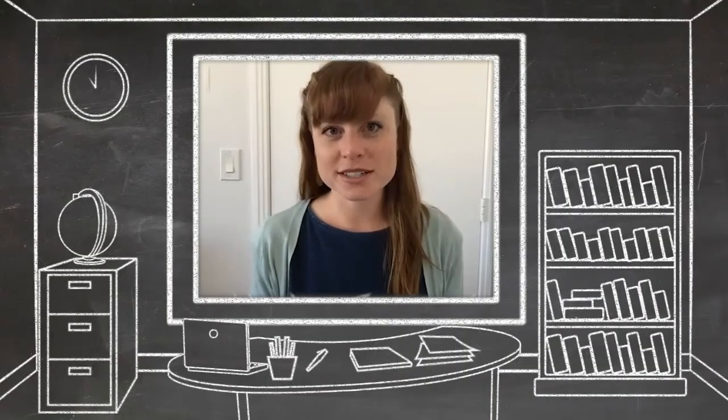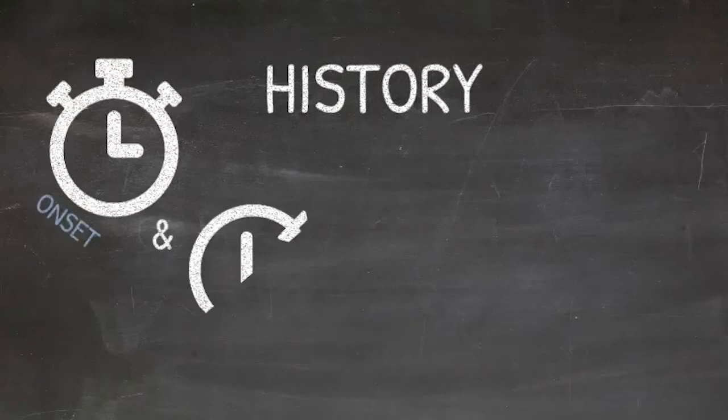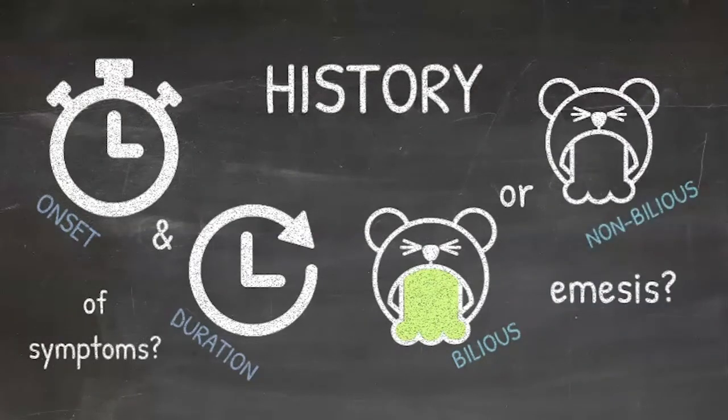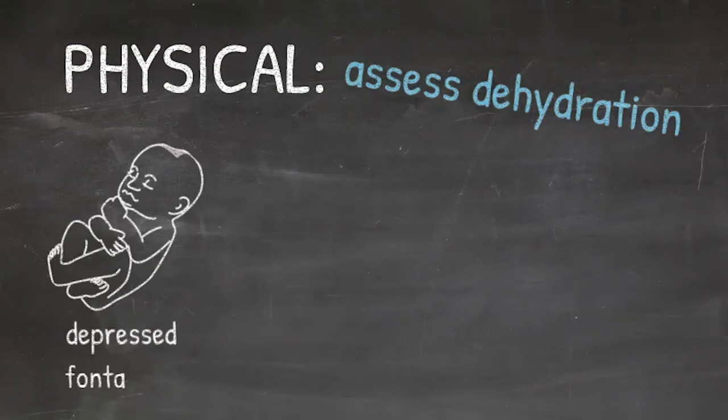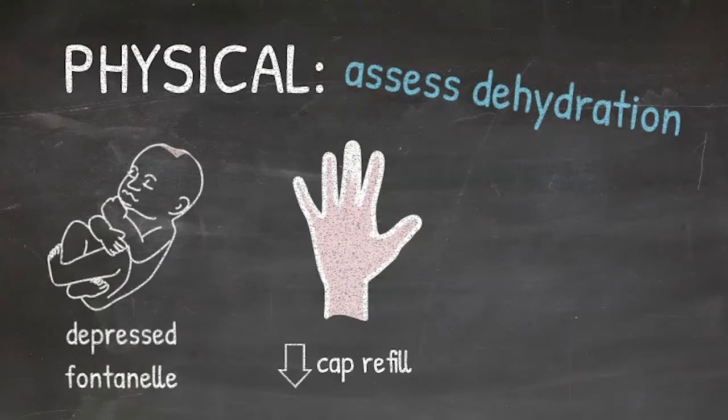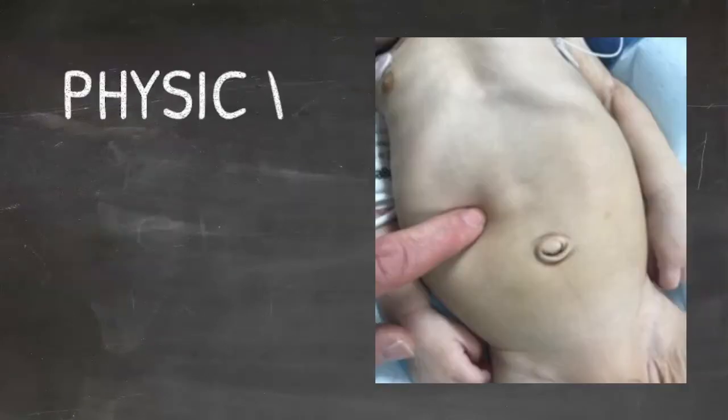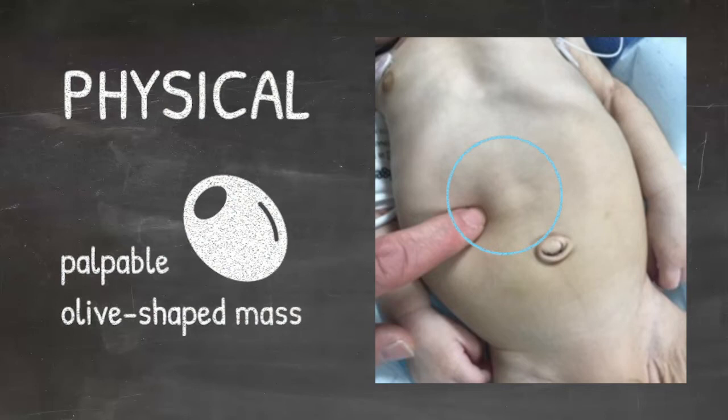How do you diagnose pyloric stenosis? The workup should start with a good history. Onset and duration of symptoms, character and nature of emesis are important. The most important part during a physical exam is to look for signs of dehydration. A depressed fontanel, decreased capillary refill, and low urine output are important. You may find a palpable epigastric mass, known as an olive, but this is more likely to be seen once patient is asleep.